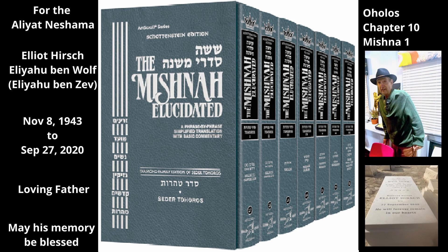Chapter 10, Mishnah 1. Much of this chapter deals with a one-room house that has an opening in its roof. In such a building, the ohel formed by the roof of the house does not include the space beneath the opening. The house is thus divided into two areas: the area under the actual roof, which is an ohel, and the area under the opening, which is not an ohel.